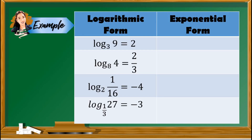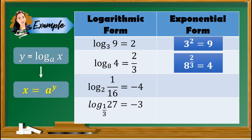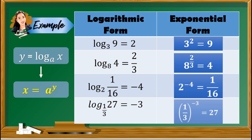Let's practice converting logarithmic form to exponential form. Using the rule: y equals log base a of x converts to x equals a raised to y. Example 1: log base 3 of 9 equals 2 is equivalent to 3 squared equals 9. Example 2: log base 8 of 4 equals 2/3 gives 8 raised to 2/3 equals 4. Example 3: log base 2 of 1/16 equals negative 4 gives 2 raised to negative 4 equals 1/16. Example 4: log base 1/3 of 27 equals negative 3 gives 1/3 raised to negative 3 equals 27. Notice that the base in the logarithm is always the base in the exponential form.